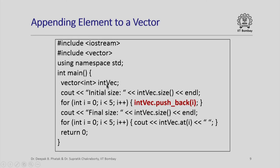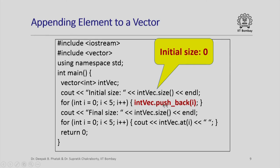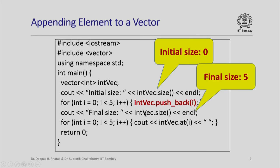I can also append an element to a vector. Here I declare 'int_vec' without specifying a size, so it starts as a vector of size 0. The initial size printed is 0. Using 'push_back()', I append elements one at a time: after pushing 0, 1, 2, 3, 4 in a loop, the vector grows to size 5. The final size is 5 and printing the elements gives 0, 1, 2, 3, 4.